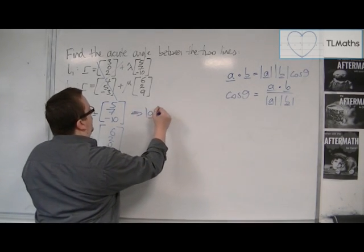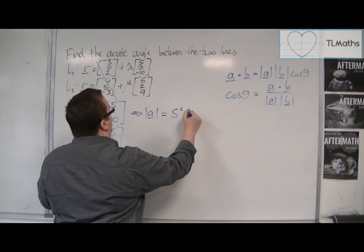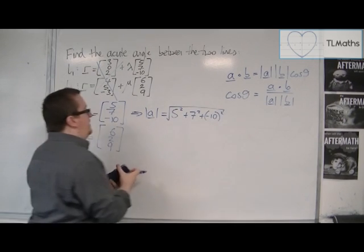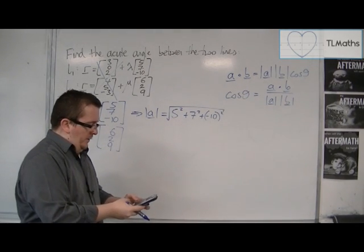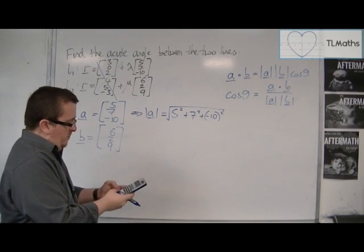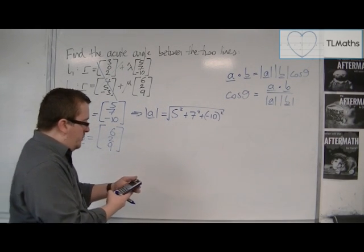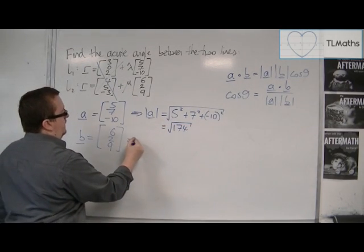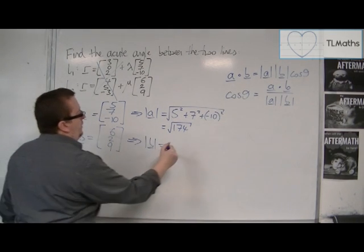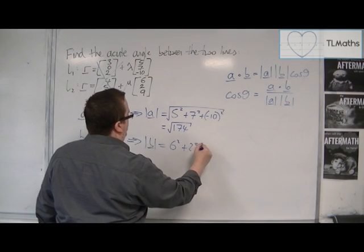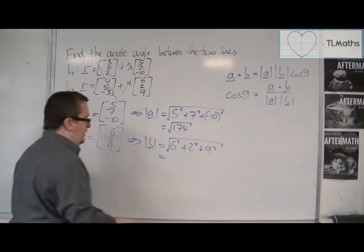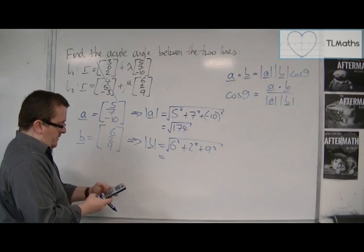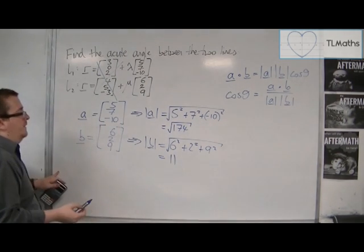Let's find |a| first. That's the square root of 5² + 7² + (−10)², which gives the square root of 25 + 49 + 100 = √174. Then |b|: the square root of 6² + 2² + 9² = √(36 + 4 + 81), which gives 11 — a whole number.